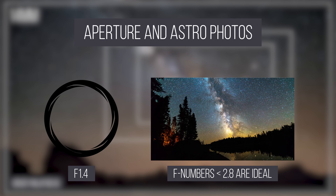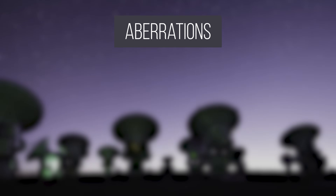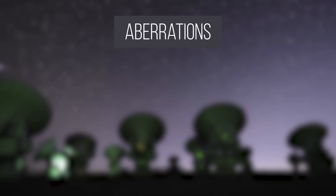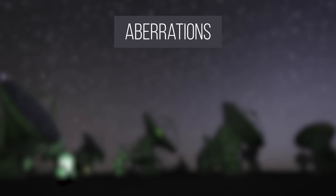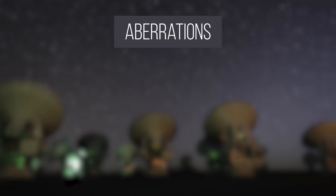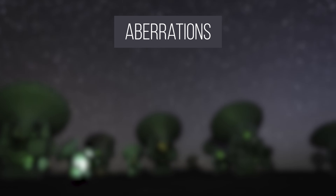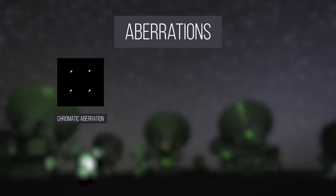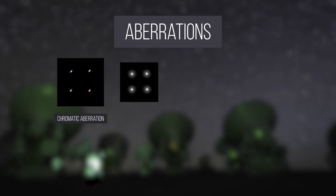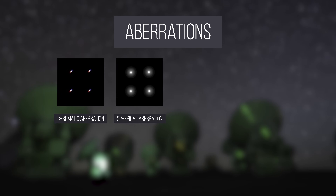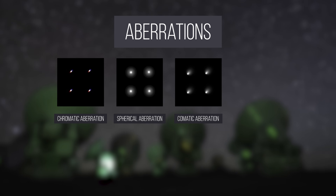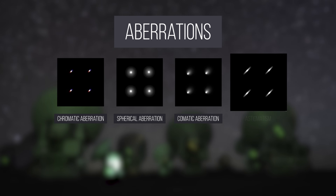Focal length and aperture are not the entire story, however. Different lenses come with different degrees of aberrations. The aberrations that make the biggest impact in astrophotography are chromatic aberrations, spherical aberrations, comatic aberrations, and astigmatisms.